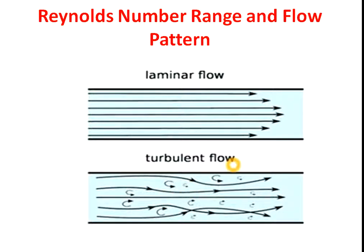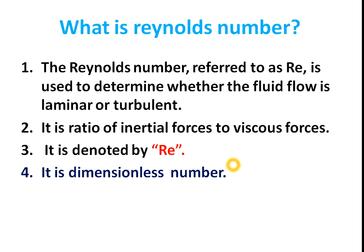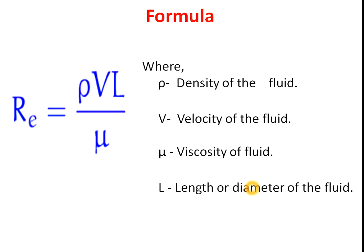The Reynolds number is a ratio of inertial forces to viscous forces. It is denoted by Re and is a dimensionless number. The Reynolds number is used to determine whether a fluid flow is turbulent or laminar.